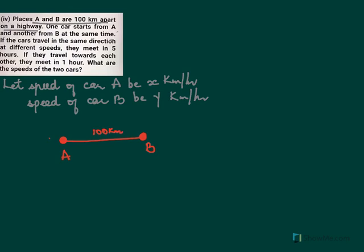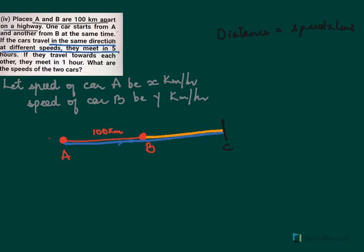Car A begins from A and travels a certain distance, and car B starts from B and also travels a certain distance. They both meet at point C. Before we begin, we know that distance equals speed multiplied by time. In the same direction case, they meet in five hours.